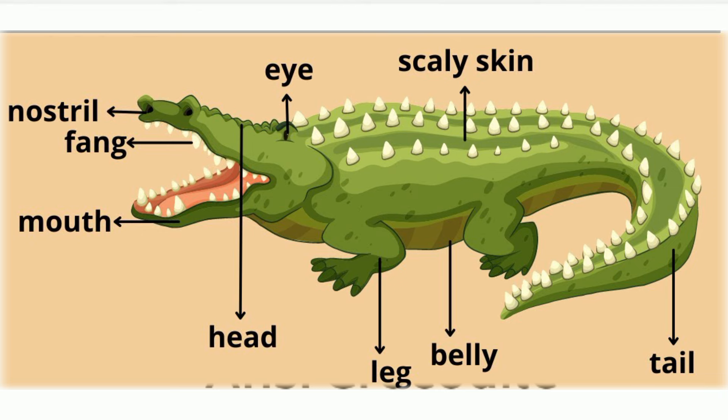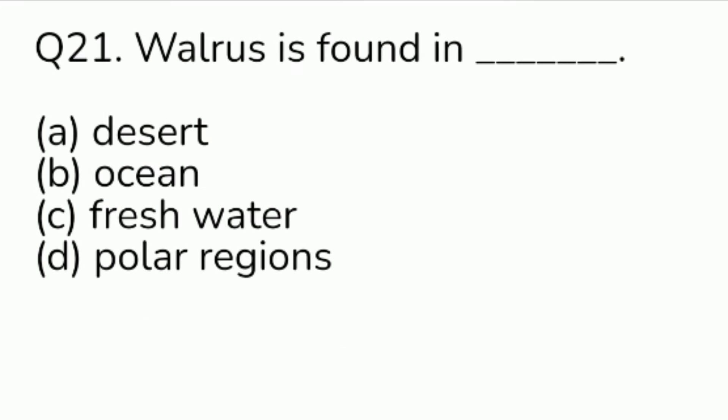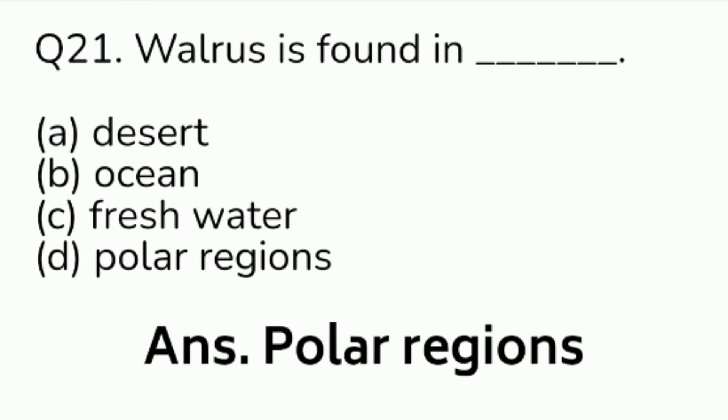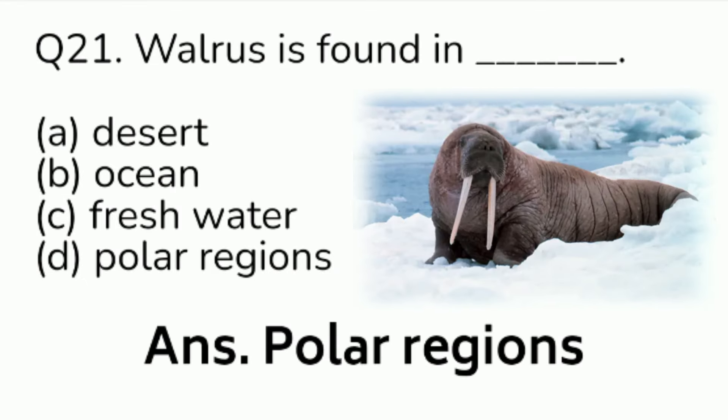Question number 21. Walrus is found in — Option A: desert. Option B: ocean. Option C: fresh water. Option D: polar regions. Answer is Option D, polar regions.